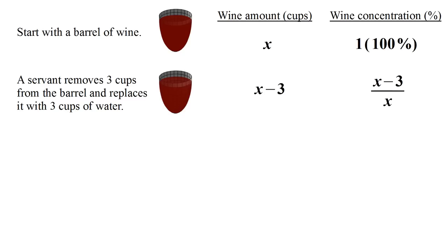So the concentration of wine will be the amount of wine, X minus three, divided by the total volume of liquid, X. If we divide this through by X, we have one minus three over X. It will be convenient to write it in this form.